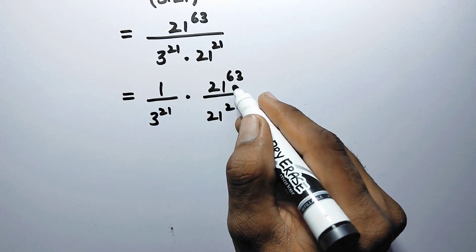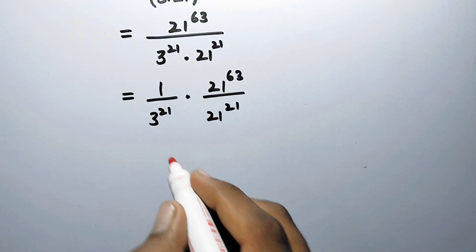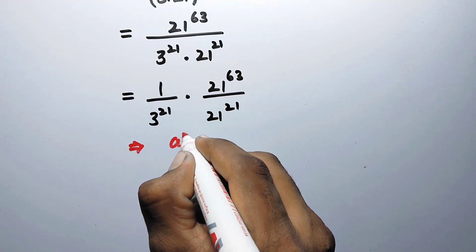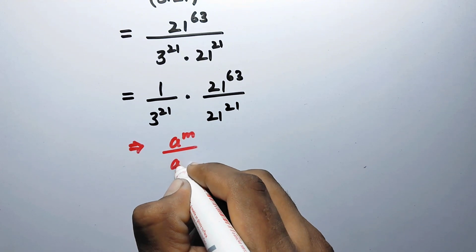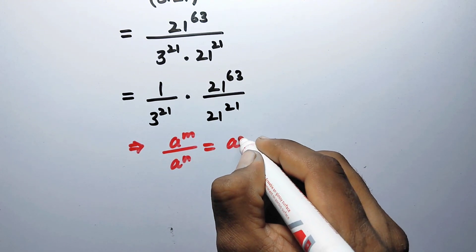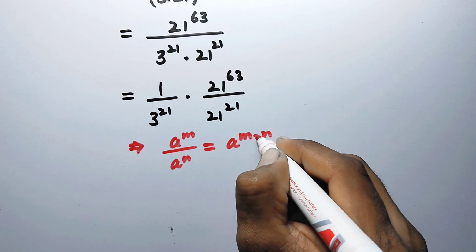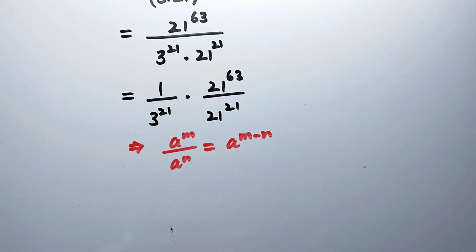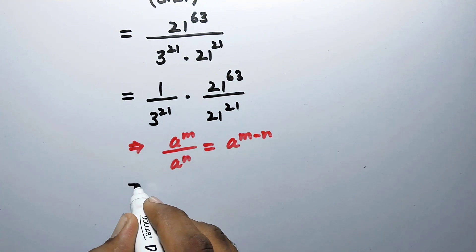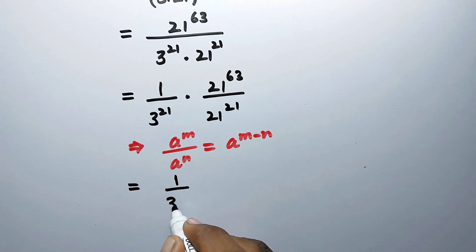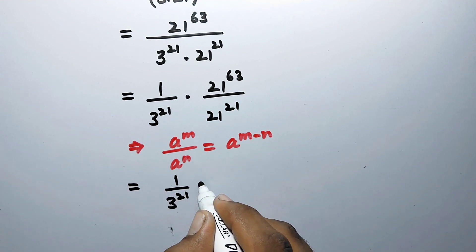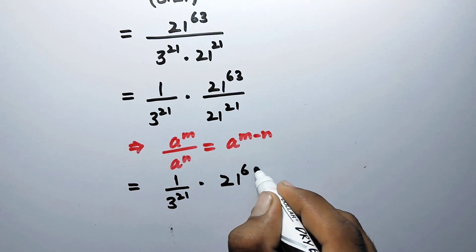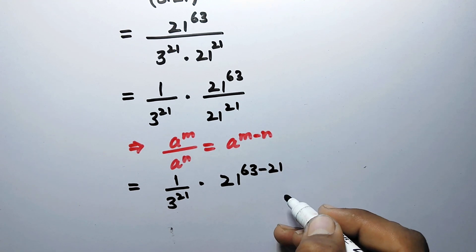Now on this term we can apply a property of exponents: a to power m over a to power n is equal to a to power m minus n. Following this identity, we can write 1 over 3 to power 21 times 21 to power (63 minus 21).